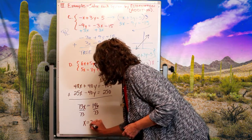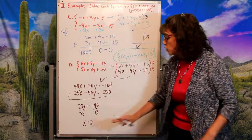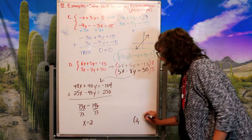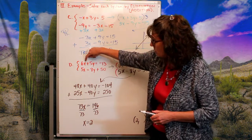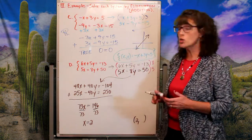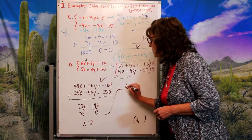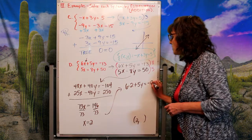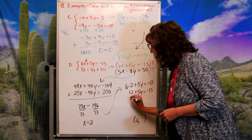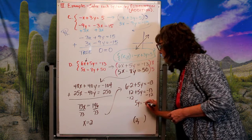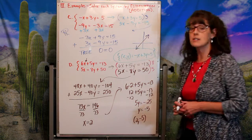Adding: 48x + 25x = 73x; the y terms cancel. Negative 104 plus 250 gives 146. Dividing both sides by 73 gives x = 2. Now I need the y coordinate: I substitute x = 2 into the top original equation: 6(2) + 5y = −13, so 12 + 5y = −13. Subtracting 12 from both sides: 5y = −25, so y = −5. The point of intersection is (2, −5).